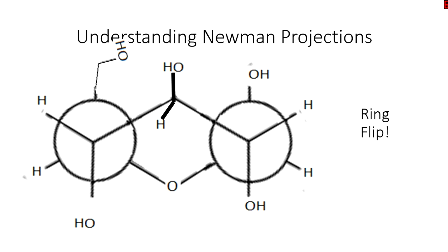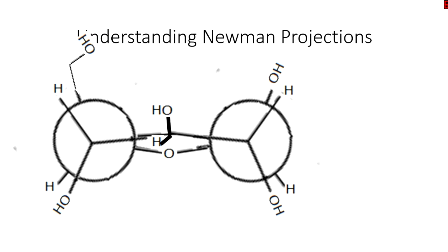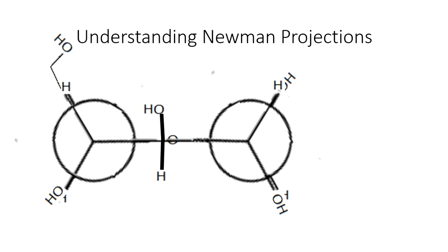Now this can't keep rotating because it's going to break a bond if it does that. So it's limited to these two rotations. And that's the Newman projections for cyclohexane.